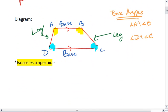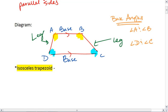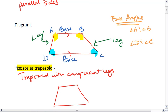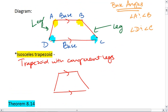There's a special kind of trapezoid that's an isosceles trapezoid. And that is a trapezoid with congruent legs. So if we have our trapezoid with one pair of opposite sides parallel, and if the legs are congruent, then ABCD is an isosceles trapezoid.